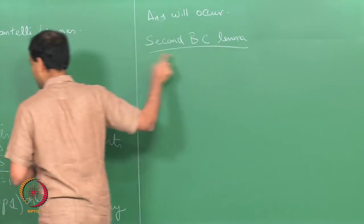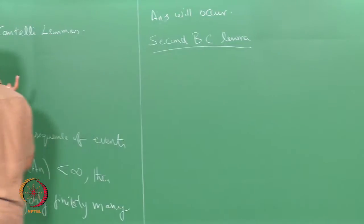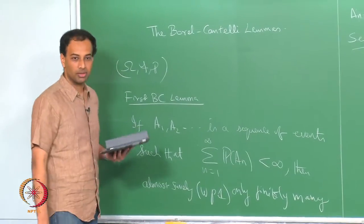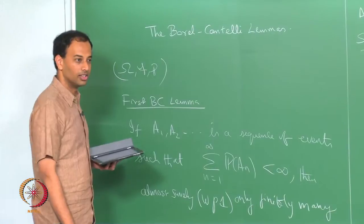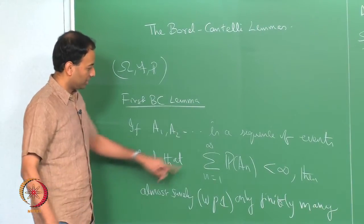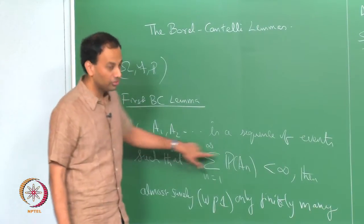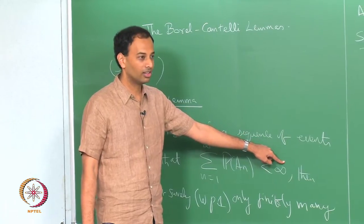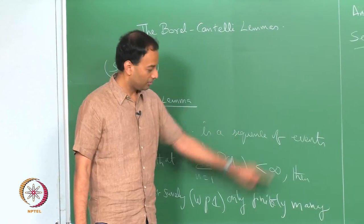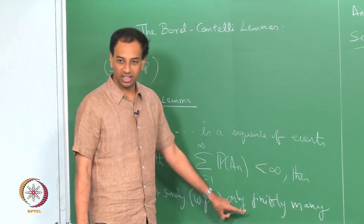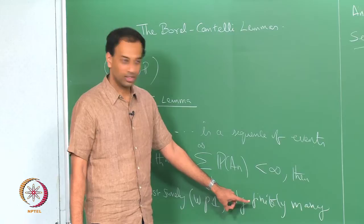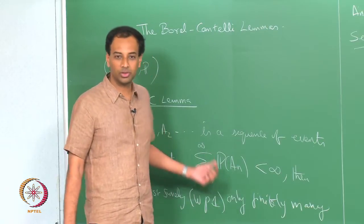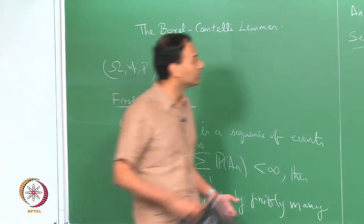The second Borel-Cantelli lemma is like a partial converse to the first BC lemma. It says that if the sum is infinite, then infinitely many A_n occur — but not quite, you need independence here. You do not need any independence for the first lemma.